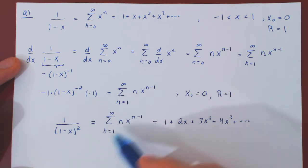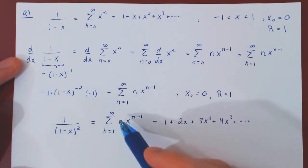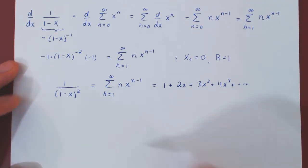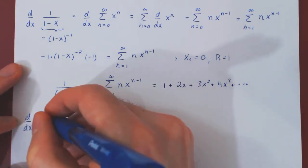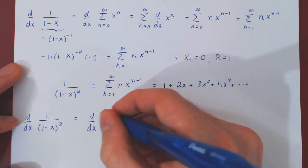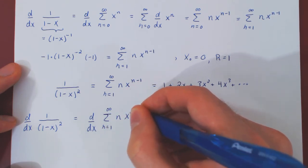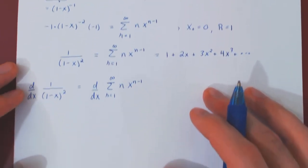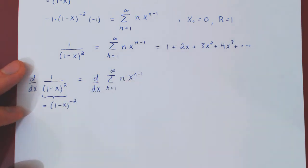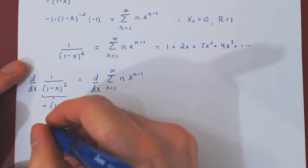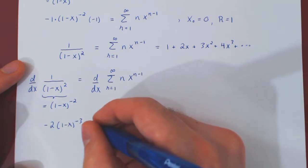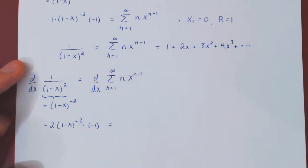Why stop there? We can repeat the process. We have 1 over 1 minus x squared equaling this power series on the open interval from negative 1 to 1, and we can differentiate both sides again. For the left-hand side, write it as 1 minus x to the power of negative 2. Applying the power rule and the chain rule gives negative 2 times 1 minus x to the negative 3, multiplied by the derivative of 1 minus x, which is negative 1.